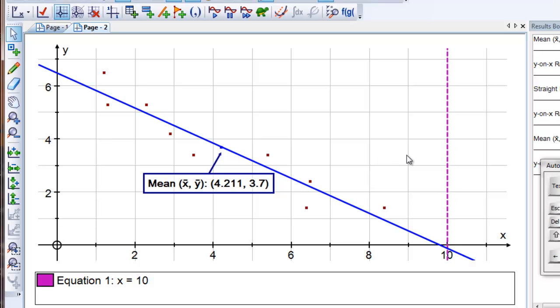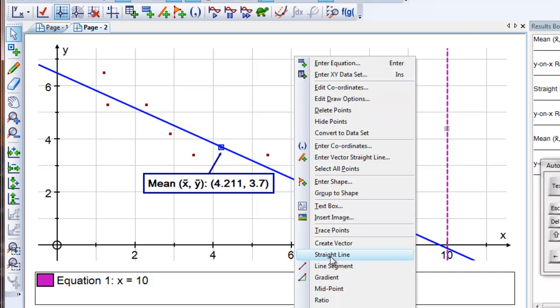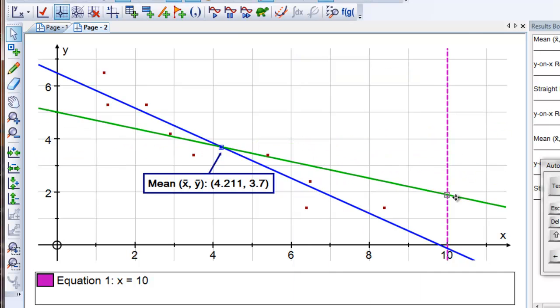So now if I put a point on this line, there it goes, and then select that point and the mean and right click, do a straight line. We've now got a variable straight line. We know it goes through the mean of the data, so what we're interested in now is to see if we can find the line which is indeed the least squares regression.